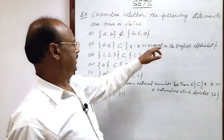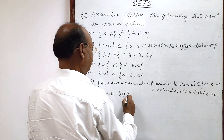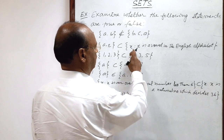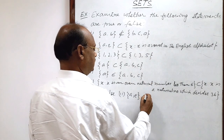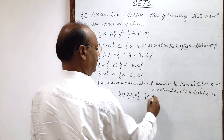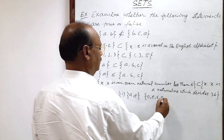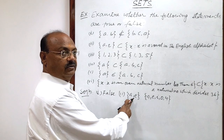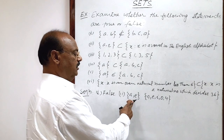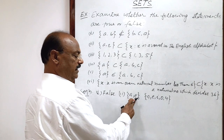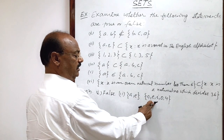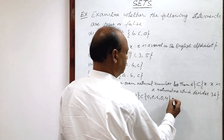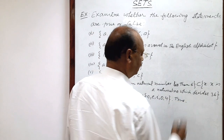So when we write this set out, we find that the left side set has elements A and E, and the right side set has all the vowels: A, E, I, O, U. Whether it should be a subset or not? Definitely it is a subset, because both elements A and E are available in the vowels set. So this is true.